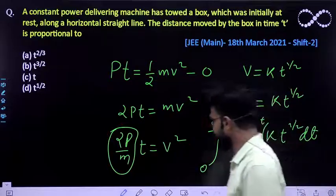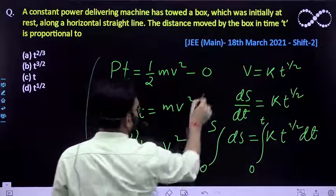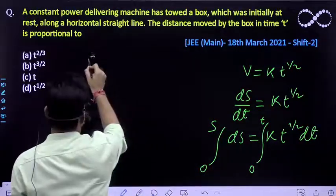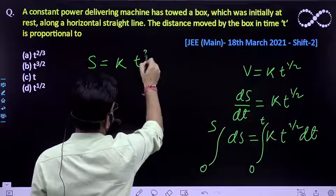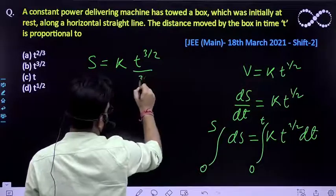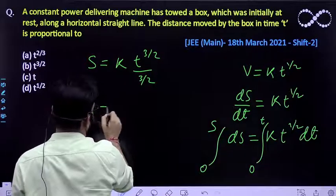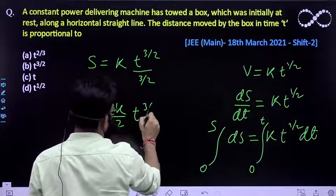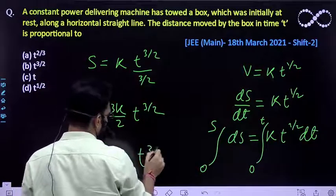So if you further solve this, what will you be getting? s must be equal to k times t to the power 3 by 2 divided by 3 by 2. So the displacement would be equivalent to 3 by 2 times t to the power 3 by 2. So this displacement is directly proportional to time to the power 3 by 2. So this is the expression that you're getting.